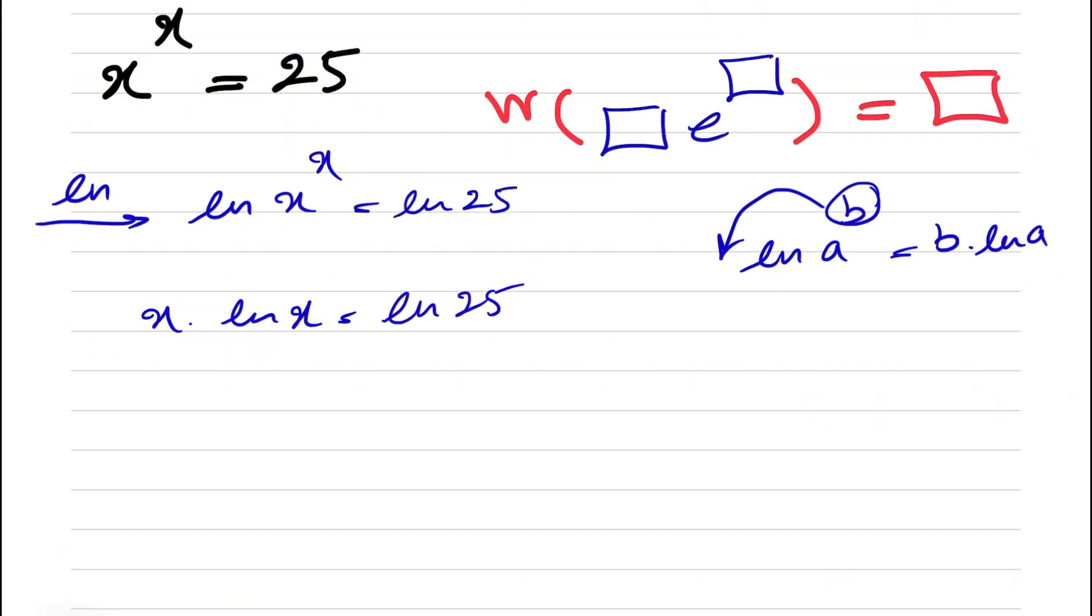And we know if we have this box we can write this down as e to the power of ln of box. So if we have x alone here, we can write down our x as e to the power of ln of x. Basically we can put everything we want for the box in here, so we're going to do that for our x. We're going to put x e to the power of ln of x times ln of x is equal to ln of 25.